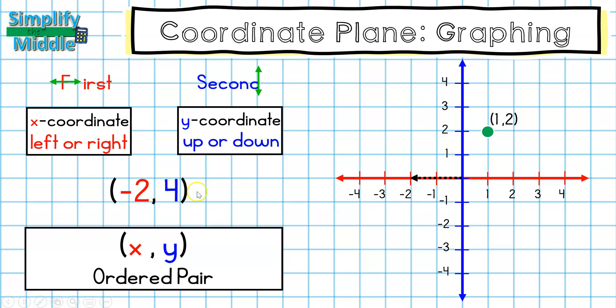Next, I look at my y-coordinate. It tells me to go to 4, which is up. So I will travel up 4. And then I'll place my point. So this location means negative 2, 4.